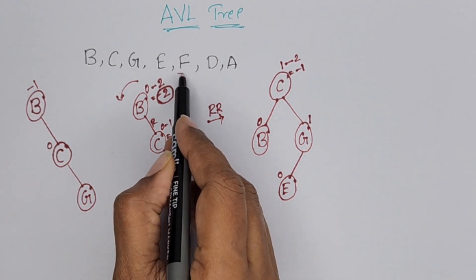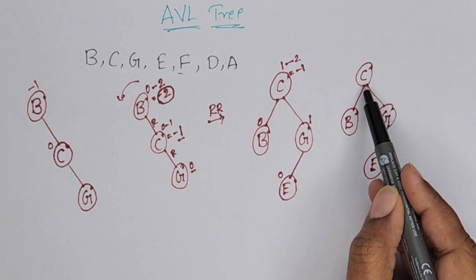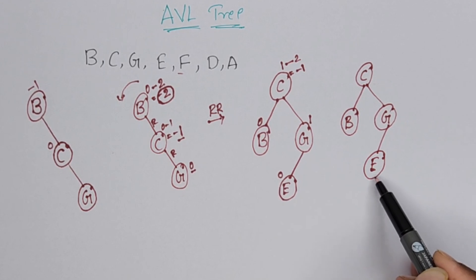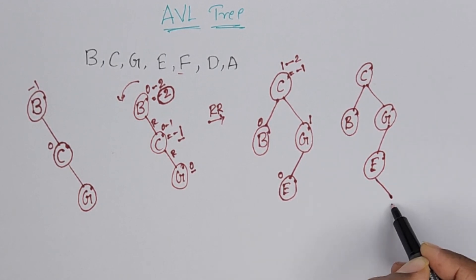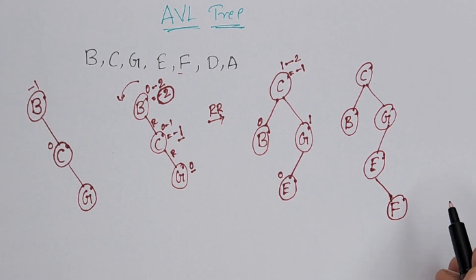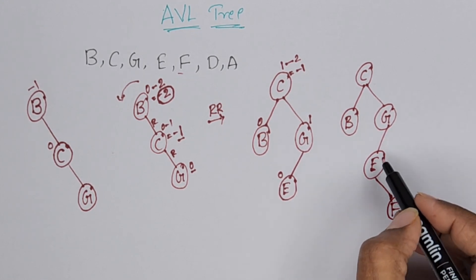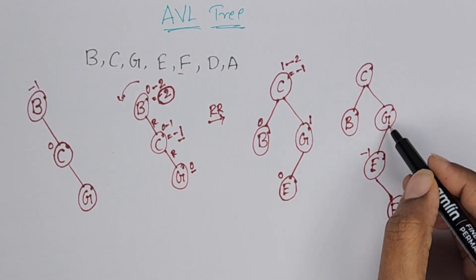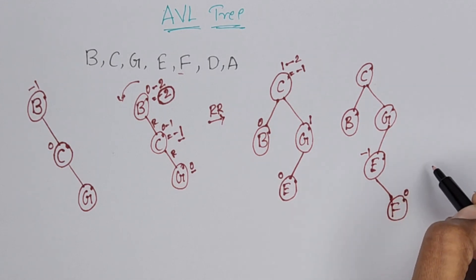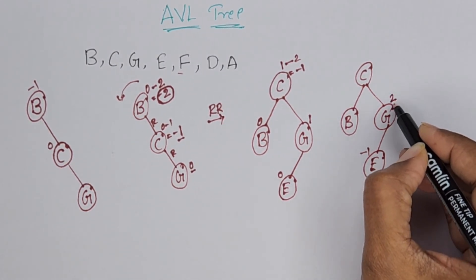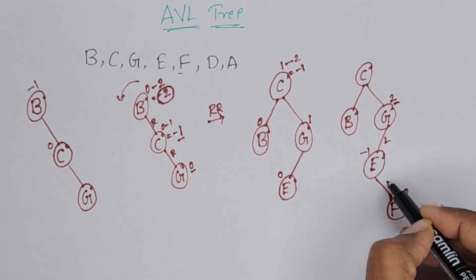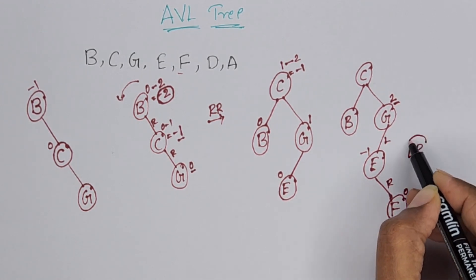Now, after E, the next character is F. F is greater than C, so right side we have to add. F is less than G, left side. Again, F is greater than E, so right of E we have to add F. F balance factor is 0. E balance factor, 0 minus 1, it is minus 1. G: these two added left side only, so left subtree height is 2, there is no right subtree. 2 minus 0 it is 2, so it is unbalanced. G is unbalanced because of adding F. Which side was it added? Left, right. So we have to perform LR rotation.